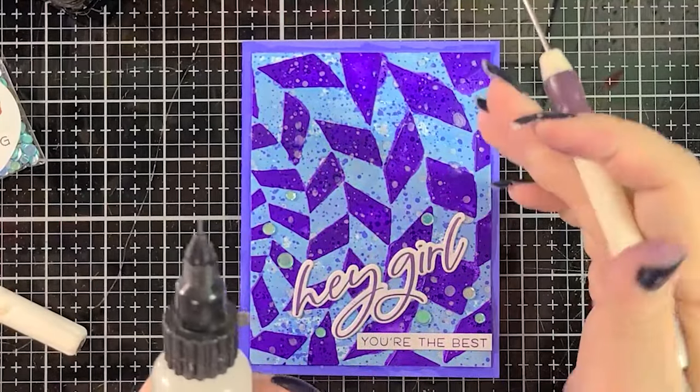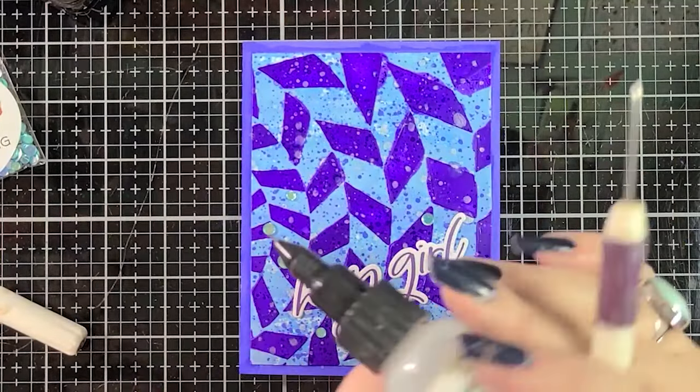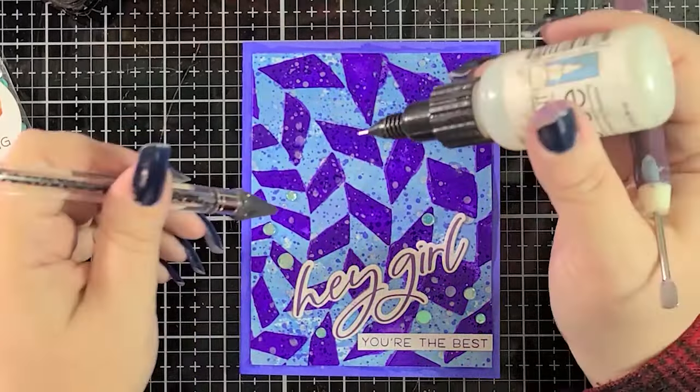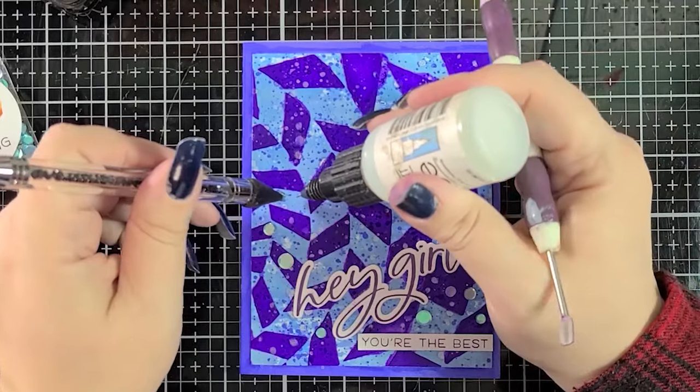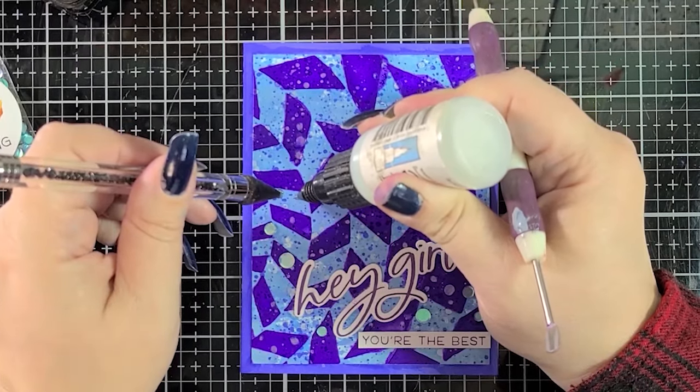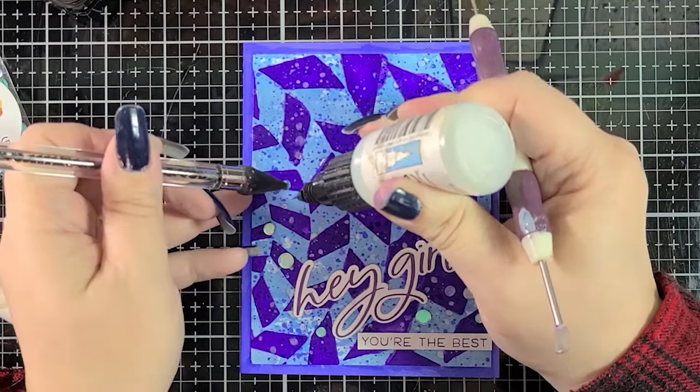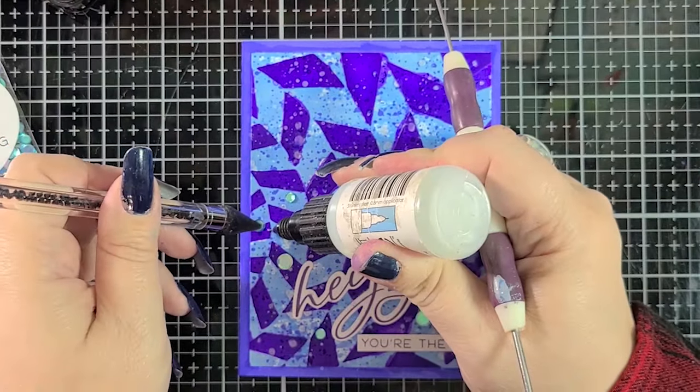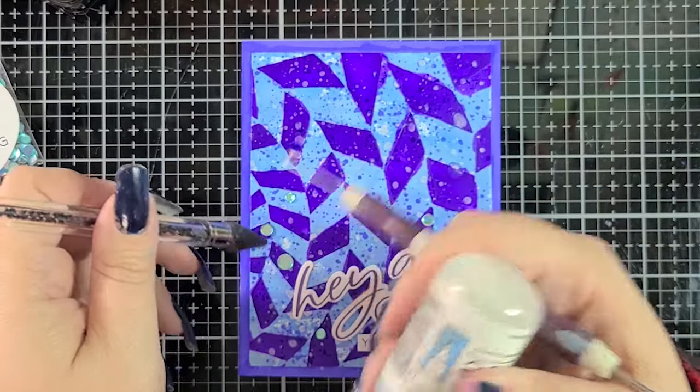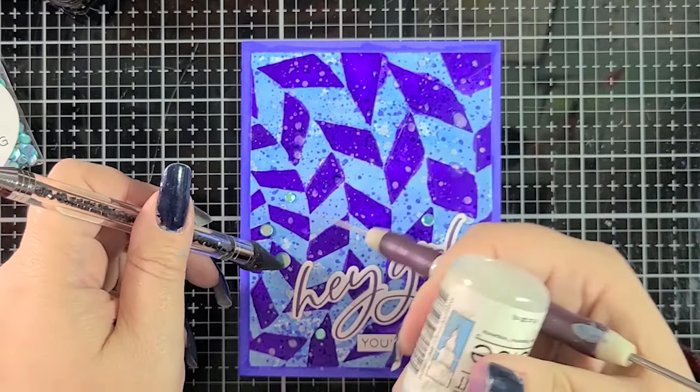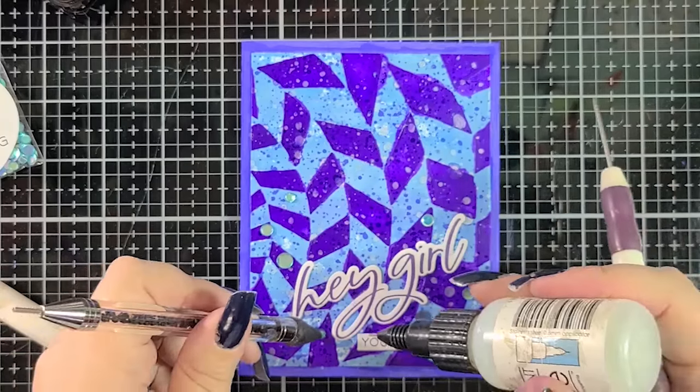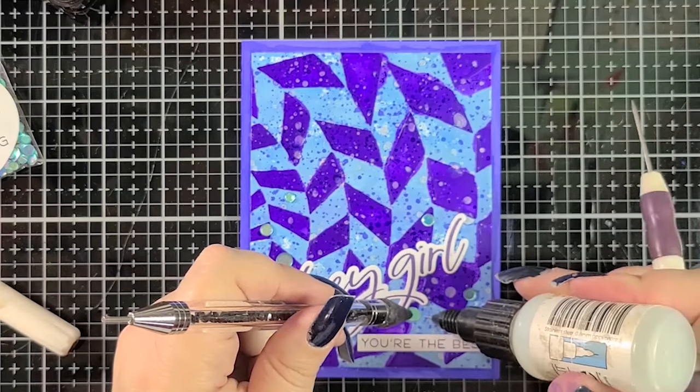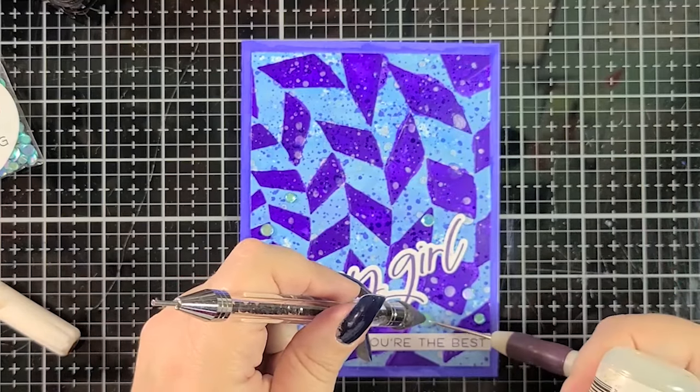I'm going to grab my pokey tool in my right hand, and the glue in my right hand, because I am right-handed, and then my jewel picker in my left hand. And I'm going to pick up the sequins, squeeze some glue, place it down, and use the pokey tool to keep it in place. And I'm going to repeat that with all of the sequins. And it makes for very quick work, and you're not struggling with trying to get the sequins off of the wax tip of the jewel picker.